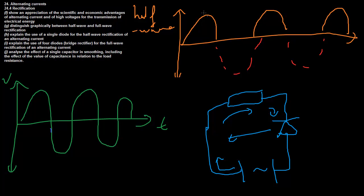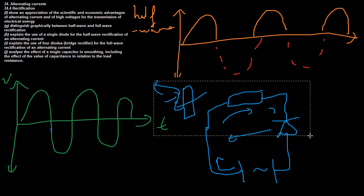Diodes are like one-way brick walls - cars or electrons can go through one way but cannot go through the other way, they kind of bounce off. So that's half-wave rectification; it's very simple. How does full-wave rectification work?